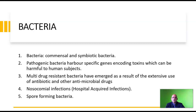Bacteria are commensal and symbiotic. Some bacteria are beneficial to human existence. For example, the bacterium which produces vitamin K in your gut is essential for producing the compounds involved in the clotting of blood. However, pathogenic bacteria which harbor specific genes encoding toxins can be harmful to human subjects. These include the bacteria which produce the cholera toxins and the shiga toxins. One of the major causes for concern is the emergence of multi-drug resistant bacteria, which have emerged as a result of extensive use of antibiotics and other antimicrobial drugs.